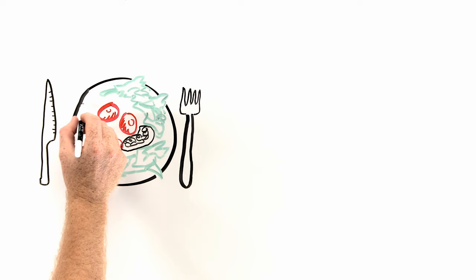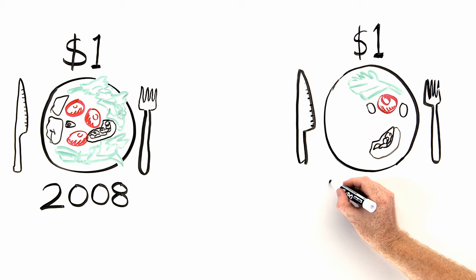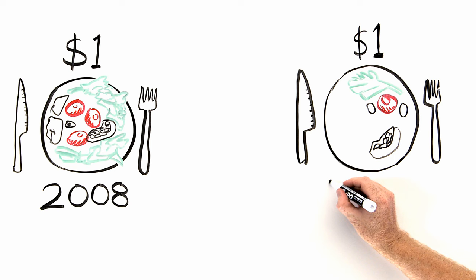To start, let's consider two images. The first shows us how much food you could buy for $1 on a market in the African nation of Zambia in 2008. The second shows us how much you could buy on the same market for $1 in 2009.